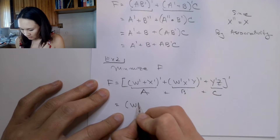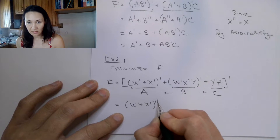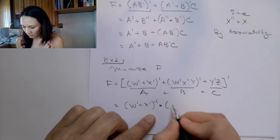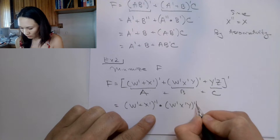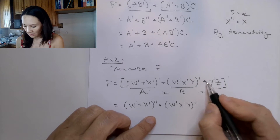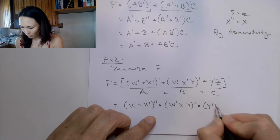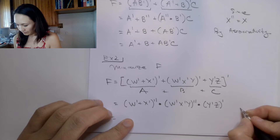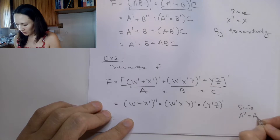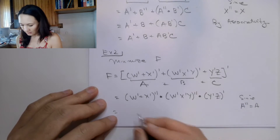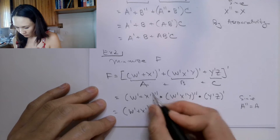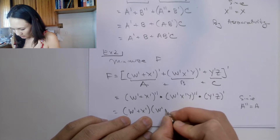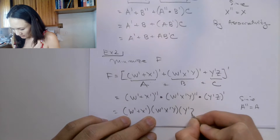This becomes (w' OR x')'' — so this NOT gets distributed in here — we change the OR to an AND, and then this term gets another NOT: (w'·x'·y)'. With the NOT from the outside distributed in, we change the OR to an AND, and then this term (y'·z) gets its own NOT. Since anything double-NOTed equals the original input, wherever we see a double NOT we simplify to get (w' OR x') AND (w'·x'·y) AND (y'·z)'.